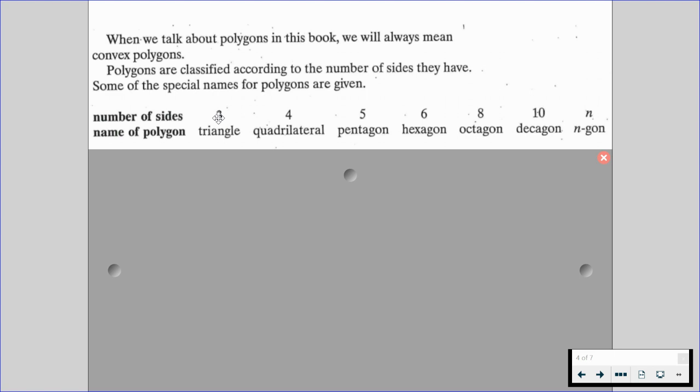So if we have three sides it's going to be a triangle, four sides is a quadrilateral, five sides is a pentagon, six sides is a hexagon, eight sides is an octagon, ten sides we call it a decagon, and n number of sides we could say n-gon. So let's say we have a 13-sided figure, we'd call it a 13-gon.